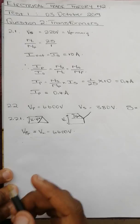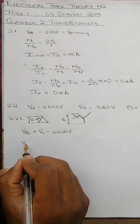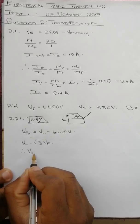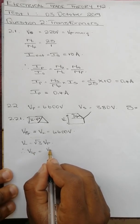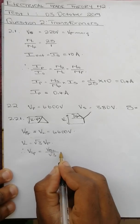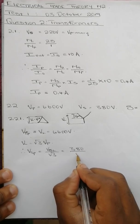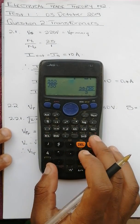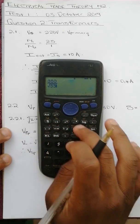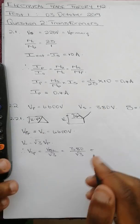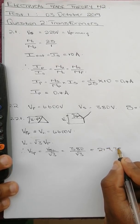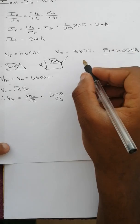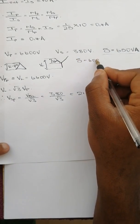For the star-connected secondary, V line equals square root of 3 times V phase. Therefore, the secondary phase voltage equals V line secondary divided by square root of 3, which is 380 divided by square root of 3, giving us 219.39 volts. S equals 650 volt-amps.